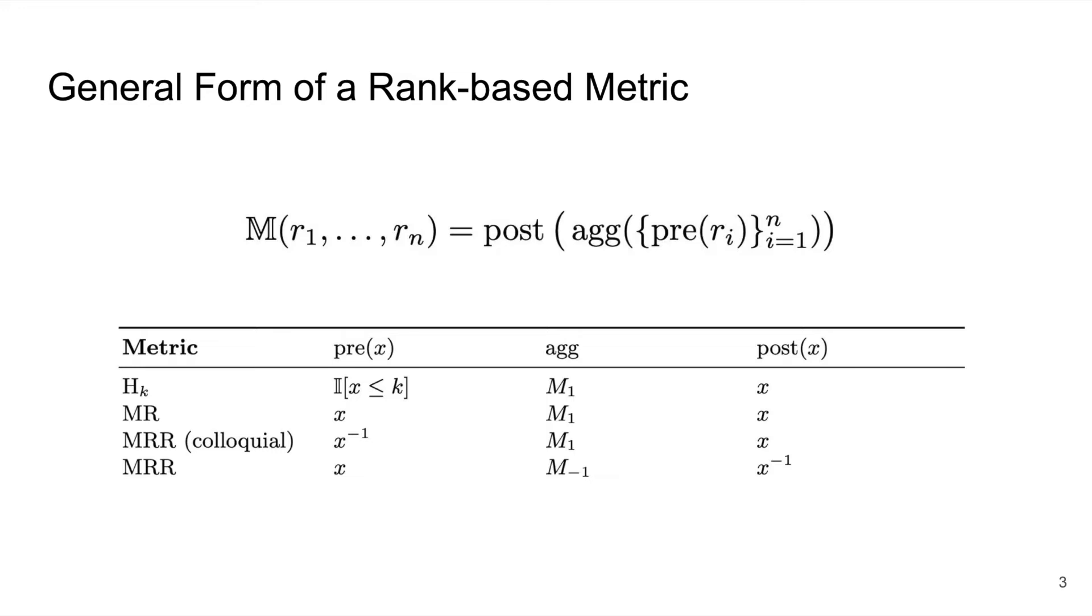Second, there's an aggregation function. In each of these three common metrics, this is the arithmetic mean, which is a special case of the generalized Hölder mean where p equals one. Third is the post-aggregation function, which is the identity in each of our three metrics, but this will be useful later on.